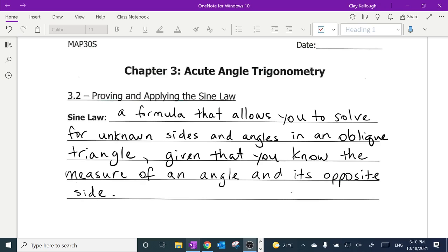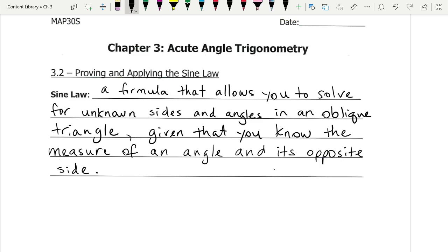Okay, and we're back. And here's what I wrote. Sine law is a formula that allows you to solve for unknown sides and angles in an oblique triangle. Do we remember from last unit what an oblique triangle is? Oblique triangles means they don't have right angles in them, given that you know the measure of an angle and its opposite side. So that's the definition of what sine law is.